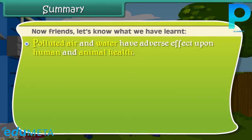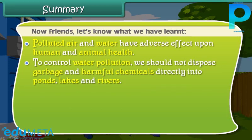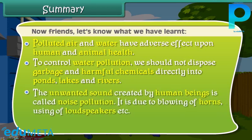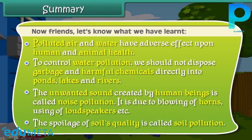Polluted air and water have adverse effects upon human and animal health. To control water pollution, we should not dispose of garbage and harmful chemicals directly into ponds, lakes, and rivers. The unwanted sound created by human beings is called noise pollution, caused by blowing of horns, use of loudspeakers, etc. The spoilage of soil quality is called soil pollution.